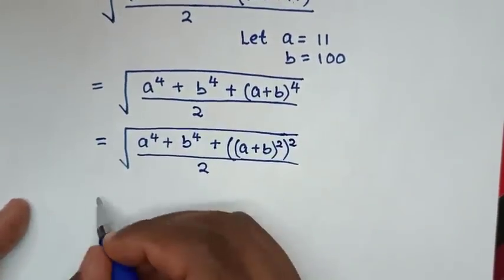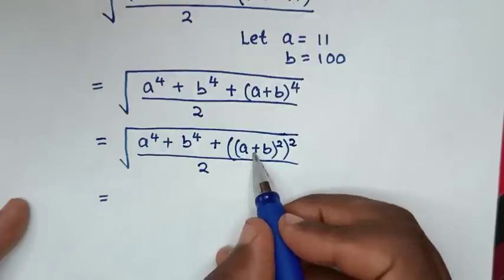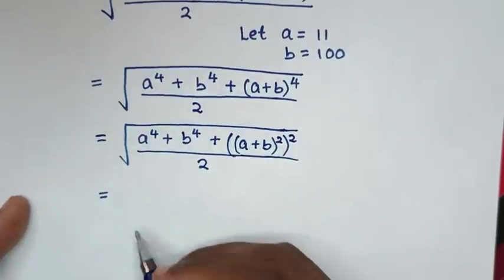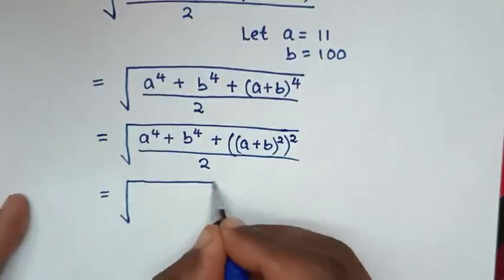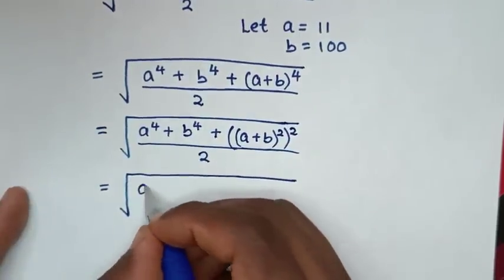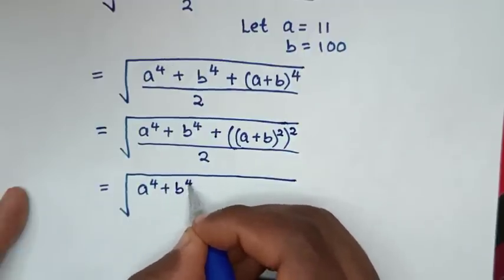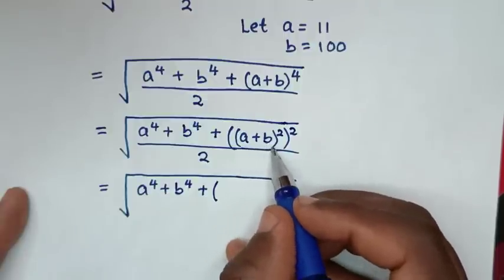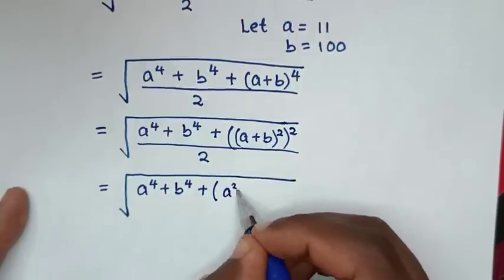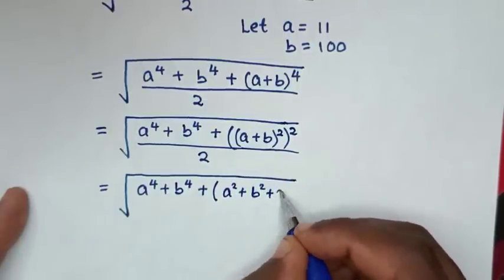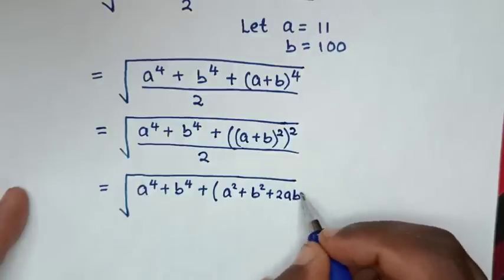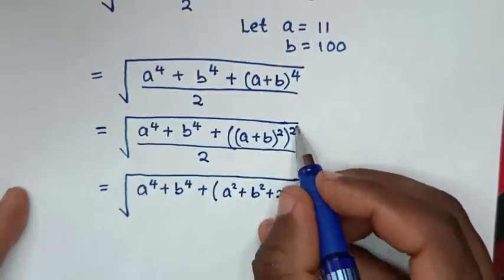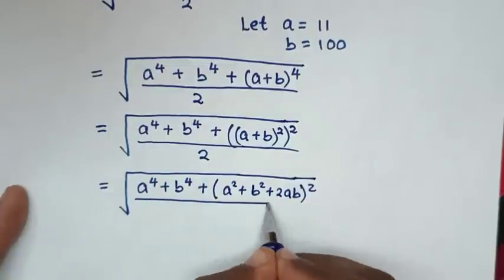In the next step, we expand (a plus b) bracket squared inside the outer bracket. So it will be equal to square root of a power 4 plus b power 4 plus: a plus b bracket squared is a squared plus b squared plus 2ab, then bracket squared — which is the outer square — then over 2.